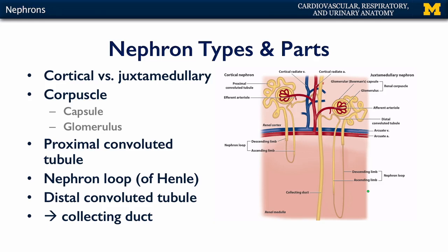When we look at the individual parts of a nephron, it's really quite simple. We have the renal corpuscle. The renal corpuscle consists of the Bowman's capsule — or just the capsule — that surrounds the glomerulus. The glomerulus is a specialized bed of capillaries that converts blood into filtrate. That filtrate then travels through what's known as the proximal convoluted tubule, which is a curlicue of bends and twists.